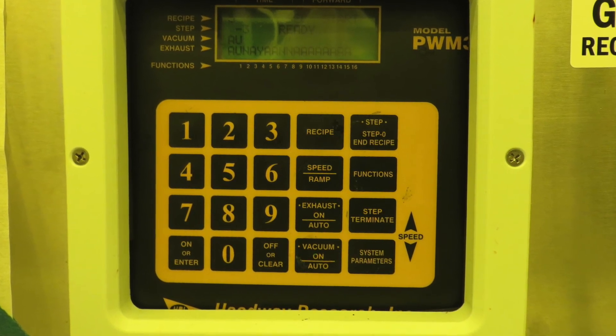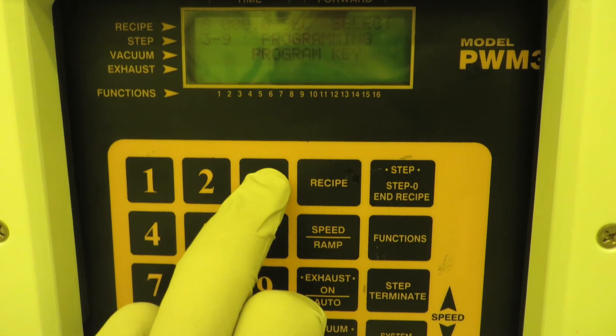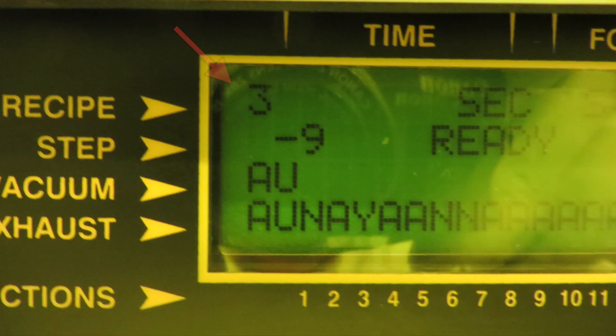So say you want to use recipe three, but you find that it's sitting on recipe eight. All you need to do is hit recipe and then three, and that's it. Now it's in recipe three and it says ready, it's ready to use.